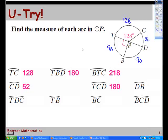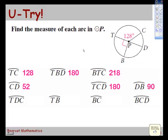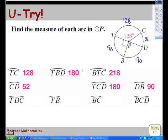And arc TDC. T to D to C. 232. How'd you find that? Yeah, we've got 180 from TBD plus the 52 from DC. So if we just add those together, we should get 232.